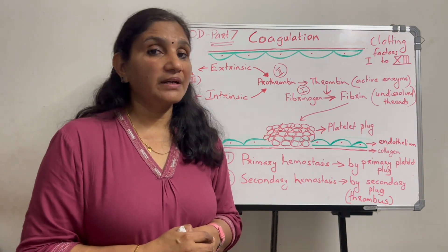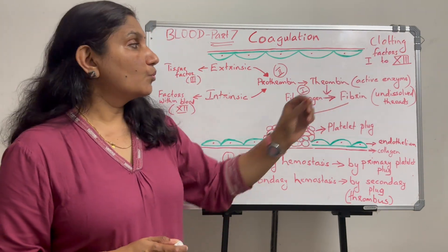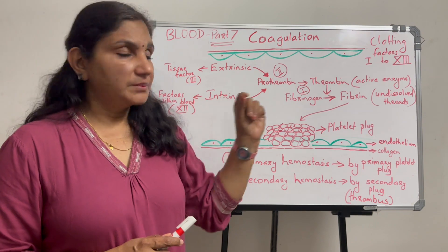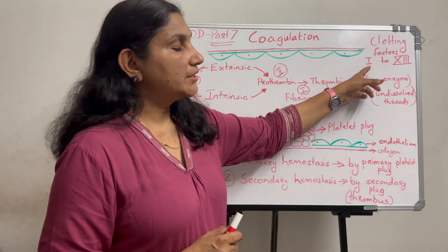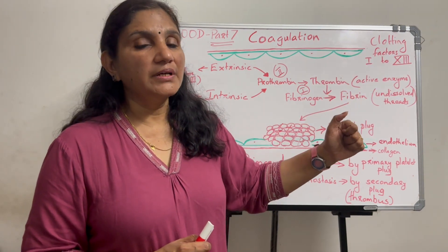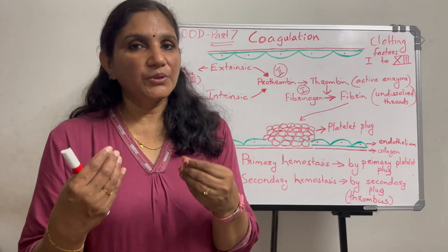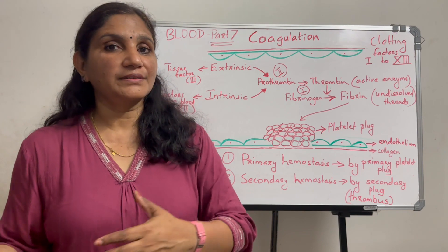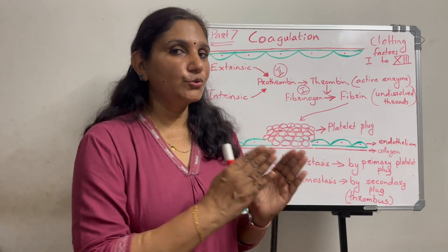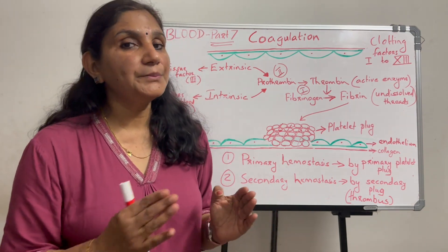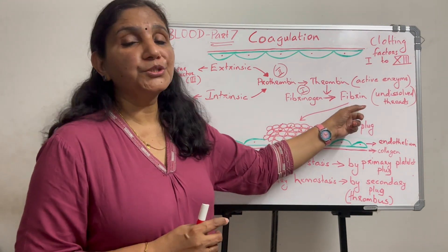Coagulation involves coagulation factors, also called clotting factors, numbered 1 to 13. Factors 1 through 5 are used, then factor 6 is now omitted from current use, so we go from factors 7 through 13 — giving us 12 active clotting factors. These clotting factors work together in a cascade to ultimately produce the fibrin thread.